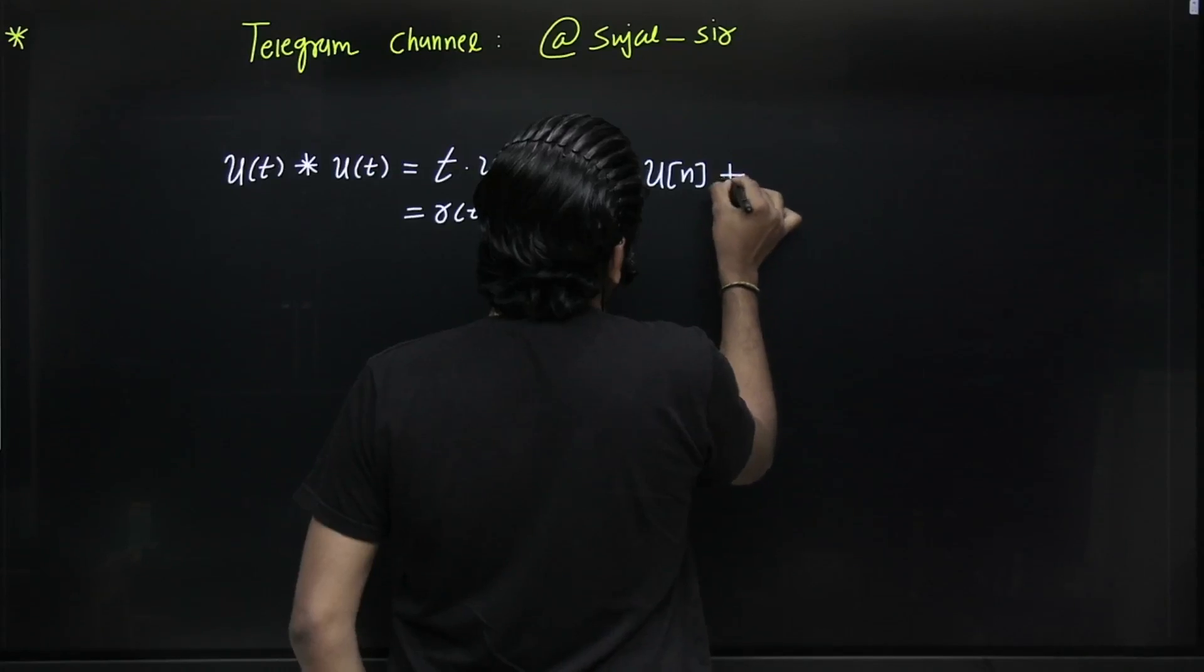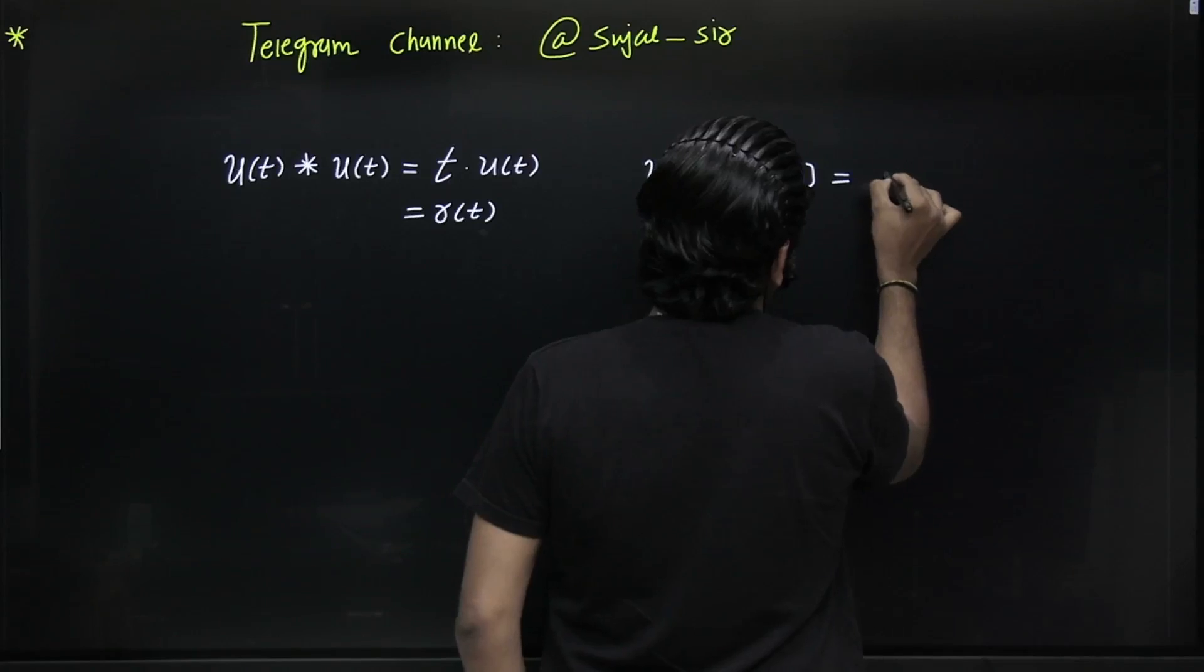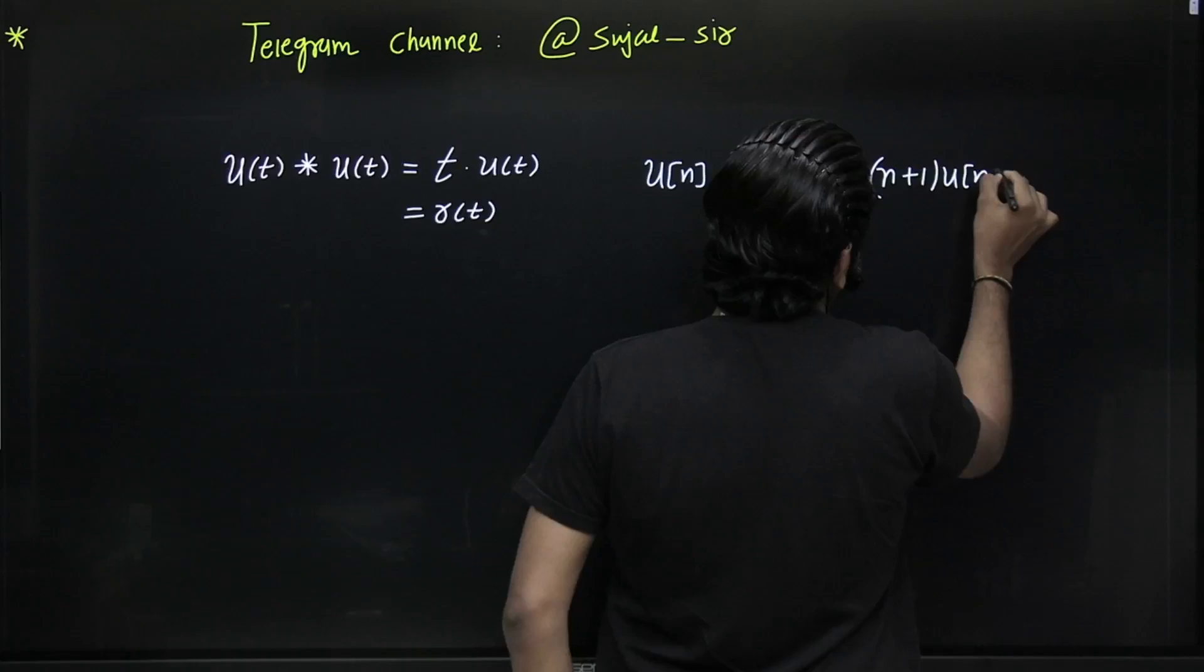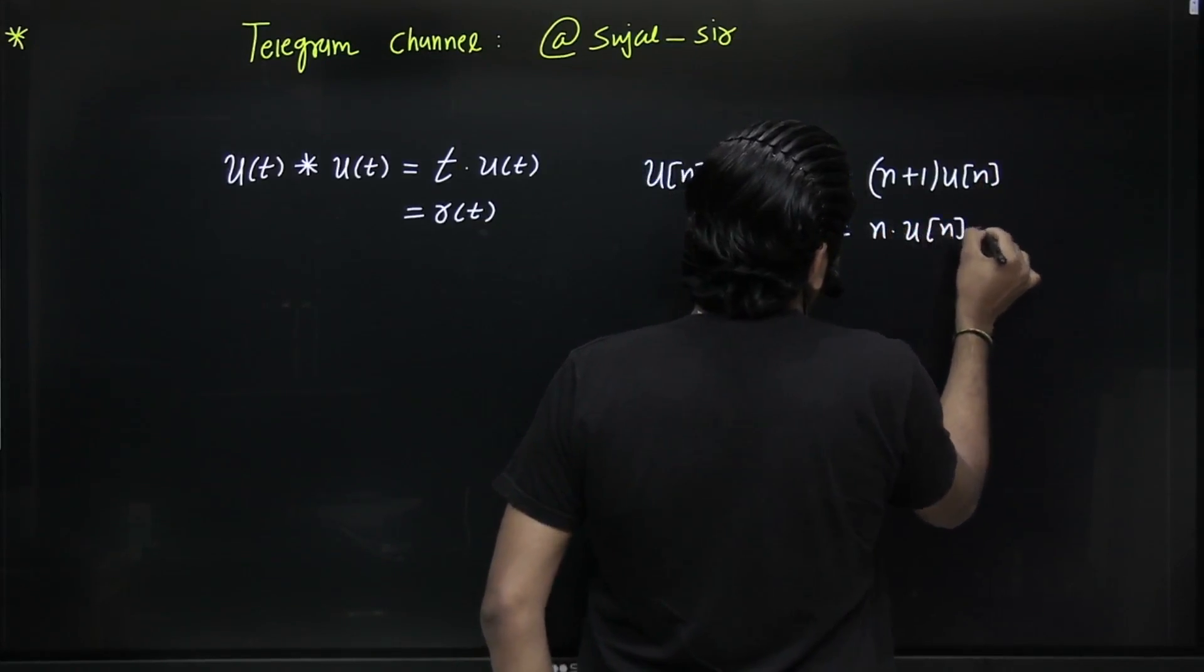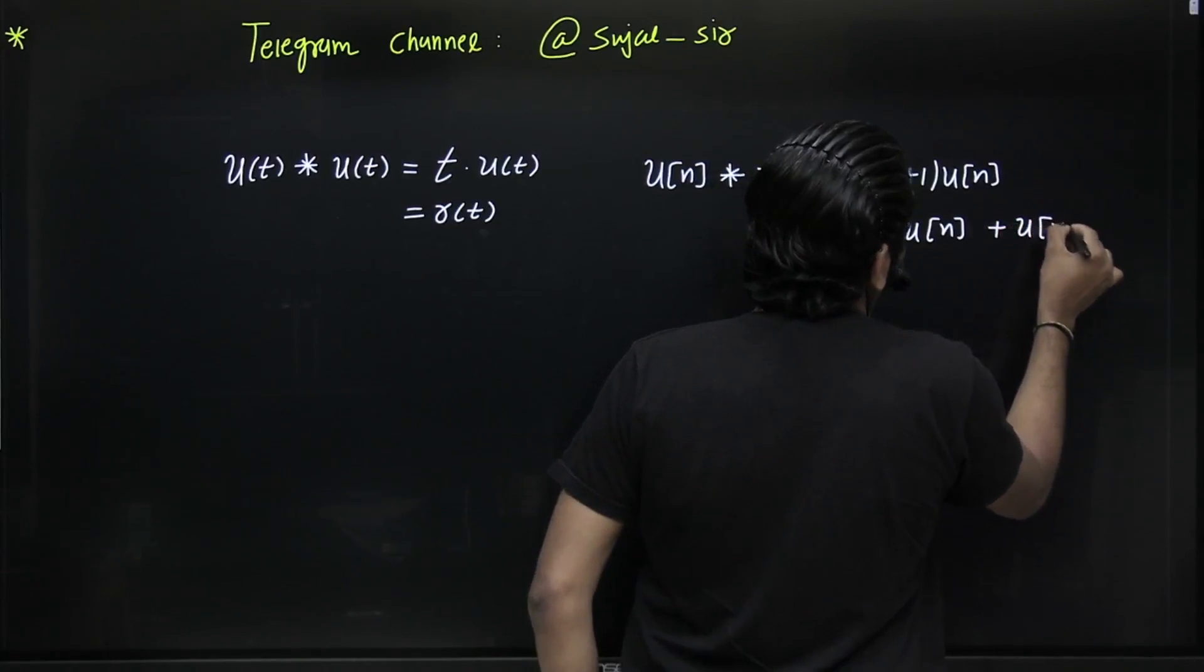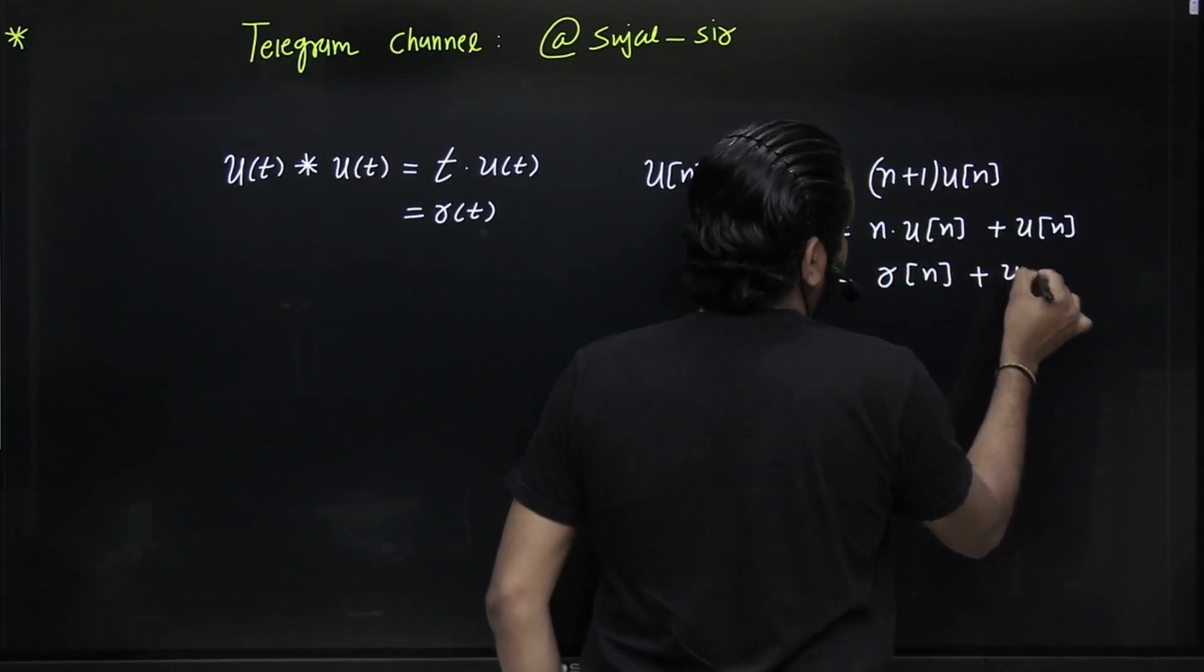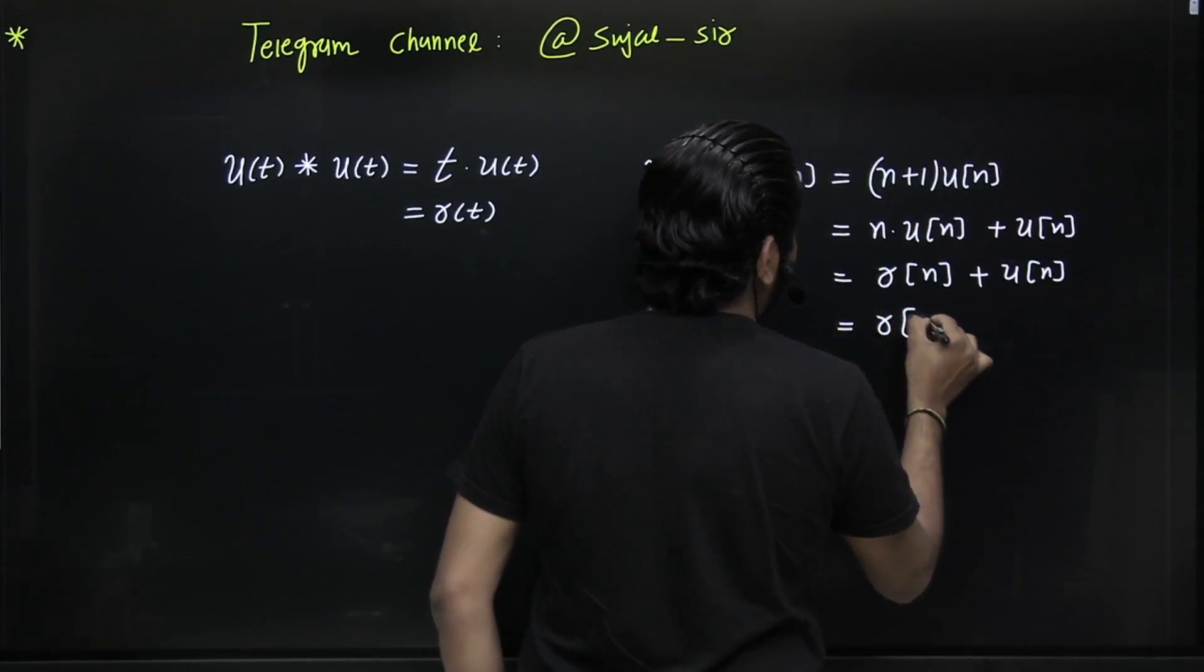u(n) * u(n) = (n+1)u(n), which equals, if you open the bracket, n·u(n) + u(n). Since n·u(n) is r(n), this becomes r(n) + u(n), which also equals r(n+1).